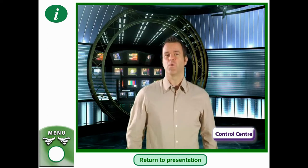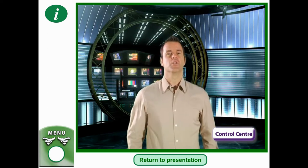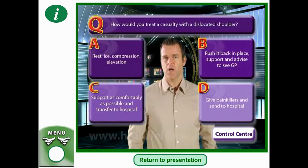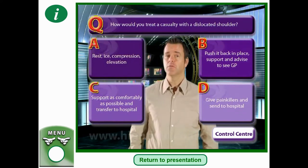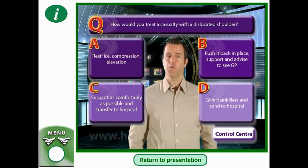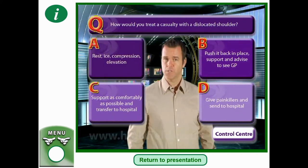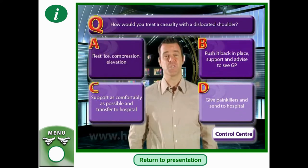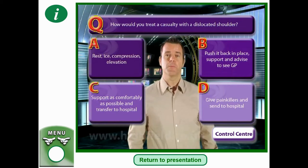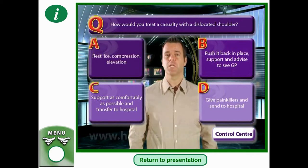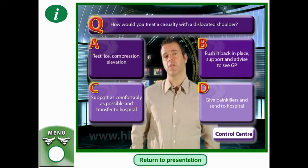How would you treat a casualty with a dislocated shoulder? A: Rest, ice, compression, elevation. B: Push it back in place, support and advise to CGP. C: Support as comfortably as possible and transfer to hospital.